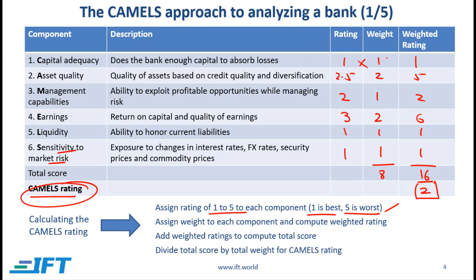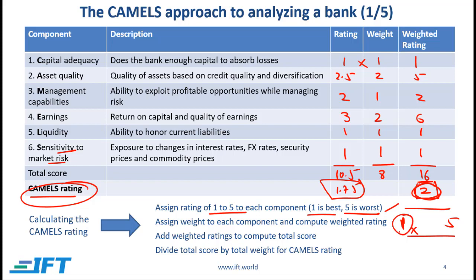This rating of 2 is based on using those weights. If we had assigned a weight of 1 to each component, the overall score would have been 10.5 divided by 6, giving 1.75. So whether we use 1.75 or 2 depends on our use of weightings. To put the rating in context, the best possible score is 1 and the worst is 5, so a rating of 2 is reasonably good because it's closer to 1.